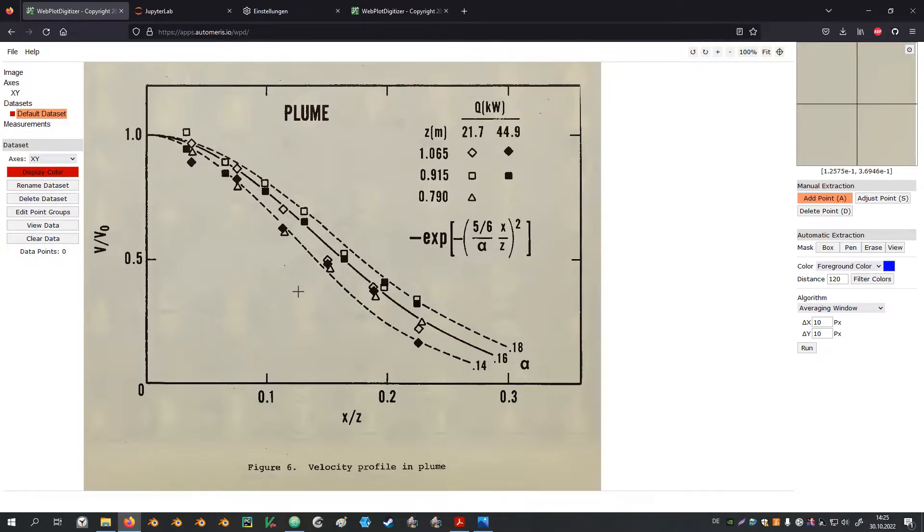Manually adding points is certainly a good way for scatter plots. I would also use that for the dashed lines here. For example by positioning a point at the center of each dash. Again locating them in the vicinity of the center and adjusting them later. For the solid lines it makes sense to use your automatic extraction functionality.